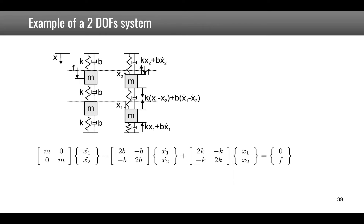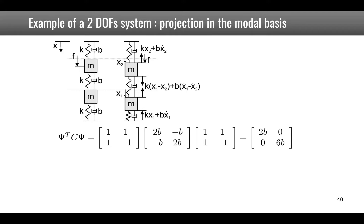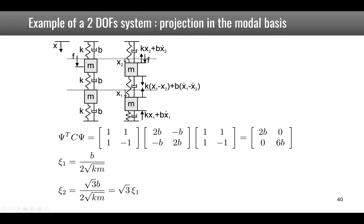For the two DOF system projected onto the modal basis, computing Psi-transpose C Psi shows that because C is proportional to K (Rayleigh damping with beta=0), it leads to a diagonal matrix. The damping ratio xi_1 = b/(2·sqrt(km)) and xi_2 = sqrt(3)·xi_1 — the damping of mode 2 is higher by a factor of sqrt(3).